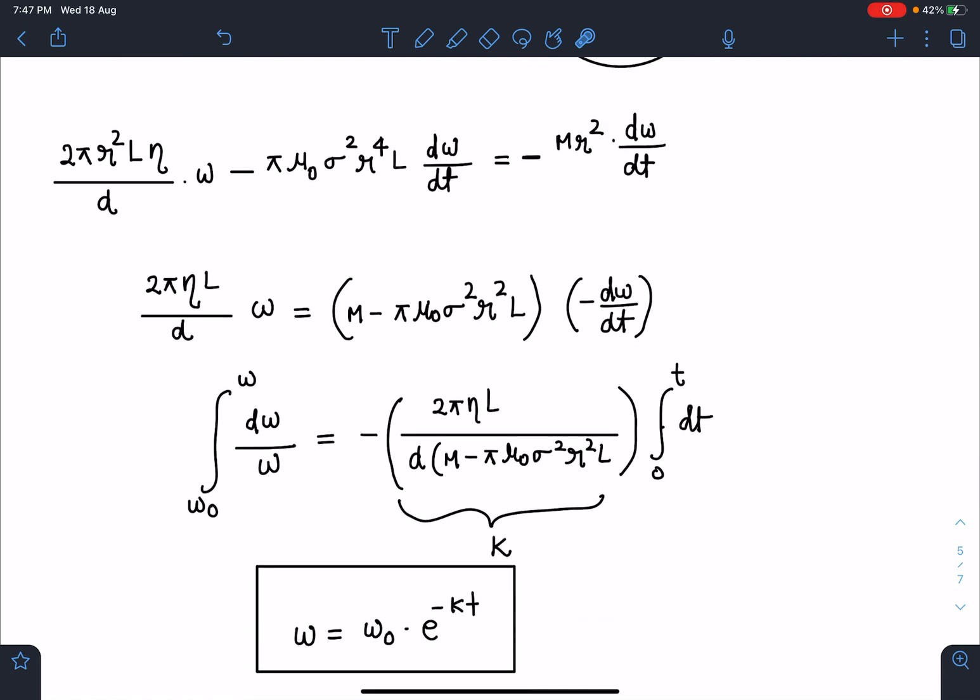When I rearrange this term, a very nice equation I am getting here. Though there are some constants like this, virtually if you see this equation it is something like dω/ω equals some k·dt. When I integrate this, I'm assuming this big expression as a new constant k. Initially omega is ω₀ and at any time t this omega is ω, so 0 to t will be the limit. Finally, my angular velocity as a function of time is coming in this form: ω = ω₀·e^(-kt).